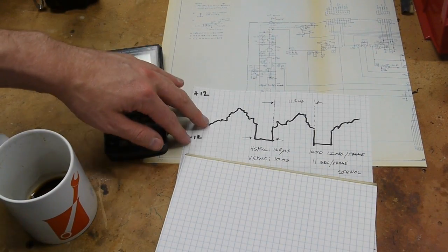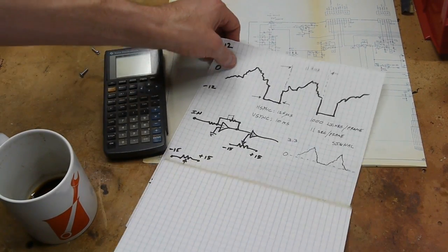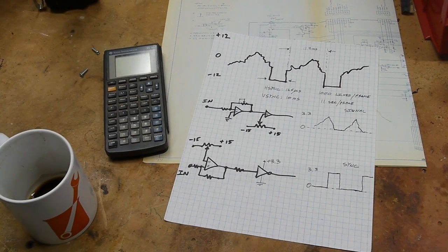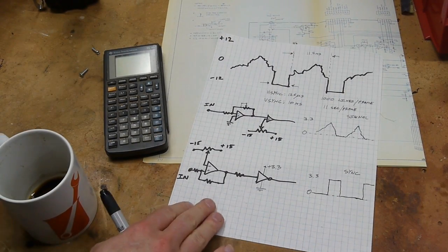If we want to get this into a microcontroller, the first step is to voltage translate it into something that won't destroy the microcontroller.